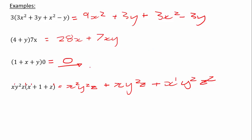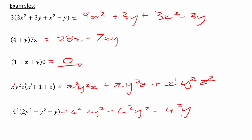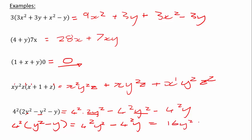Let's look at the last example. We have 4², which is 16. So 4² times (2y² − y² − y). We could write this as 4² times 2y², minus 4² times y², minus 4² times y. But notice there are common terms — we have y² appearing. So we can factor: 4² times (2y² − y²) − 4² times y, which simplifies to 4² times y² minus 4² times y. That equals 16y² minus 16y. That easy — let's underline our answer.